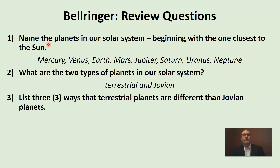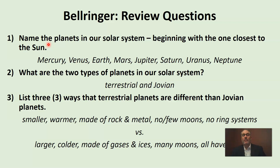Let's take a look at our last review question. Are you able to list three ways that terrestrial planets are different than Jovian planets? Pause the video and see if you can remember. Were you able to remember those characteristics? When we talked about terrestrial planets, we said they were smaller, warmer because they're closer to the Sun, their composition is rock and metal, and they have no moons or some have few moons, and no ring systems. Comparing that to our Jovian planets — they were larger, colder, made of gases and ices, they have many moons — Jupiter has over 70 moons — and all Jovian planets have ring systems.